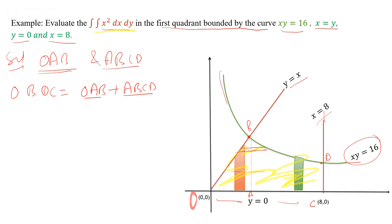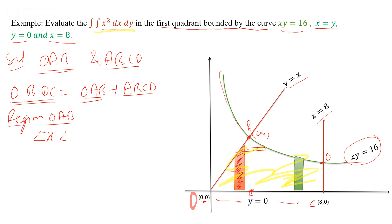The complete region OBTC equals triangle OAB plus region ABCT. For the region OAB, taking the strip along the y-axis: x varies from 0 to 4, and y varies from 0 to x (using the line y equal to x). The intersection point of y equal to x and xy equal to 16 gives the point (4, 4), and the intersection with x equal to 8 gives the point (8, 2).